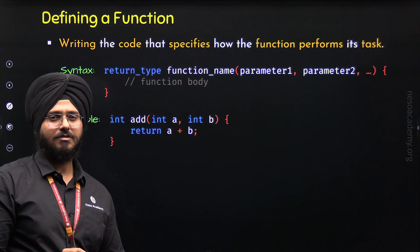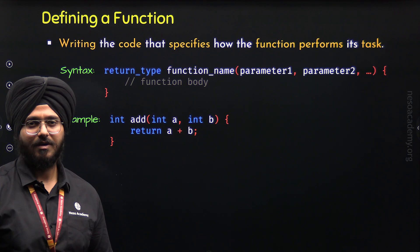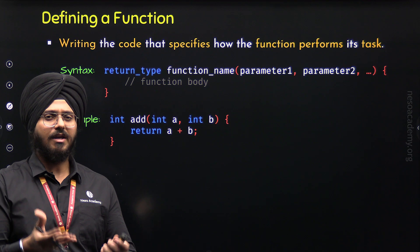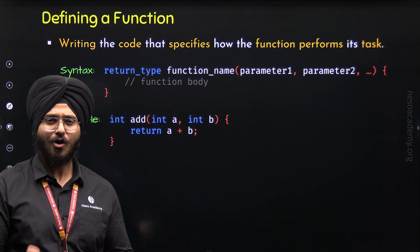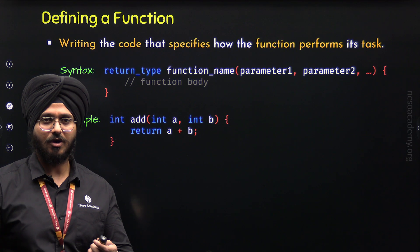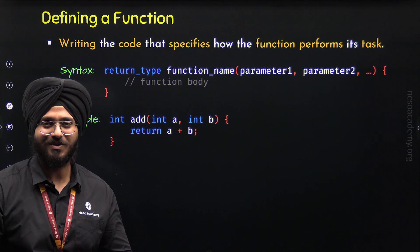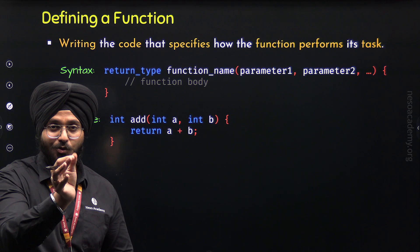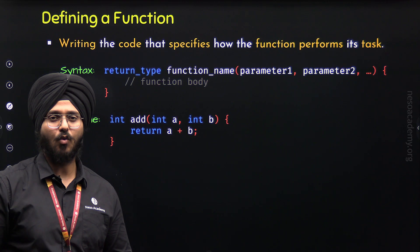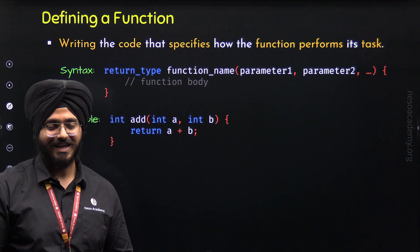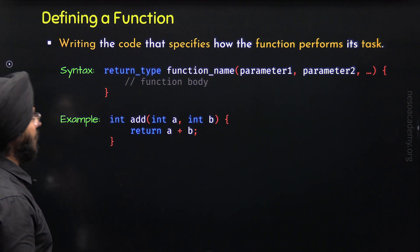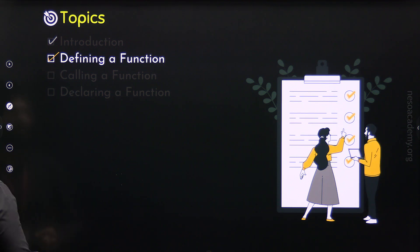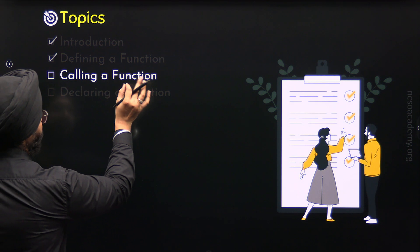But defining a function is not enough. If we have a program and we define a function, the function will not execute on its own. We need to call the function to execute it. This is exactly what we will learn in the next topic. For now, we are done with defining a function. Now let's understand how to call a function.